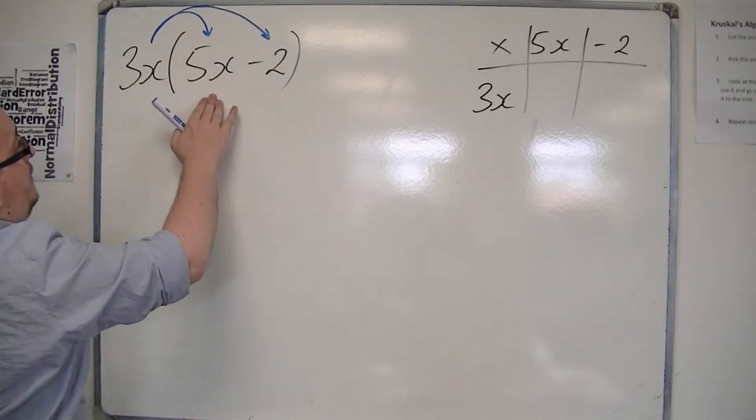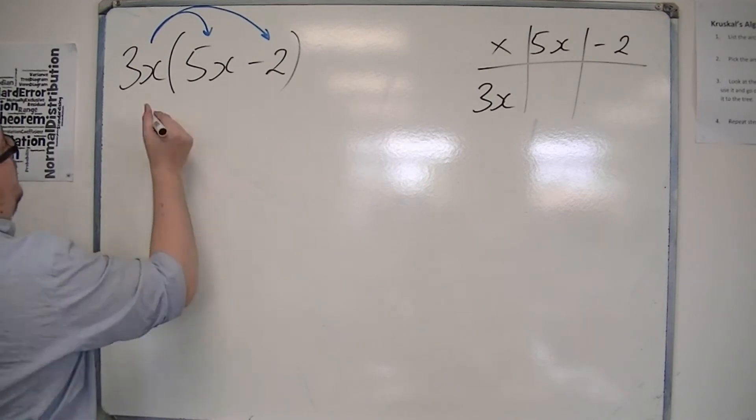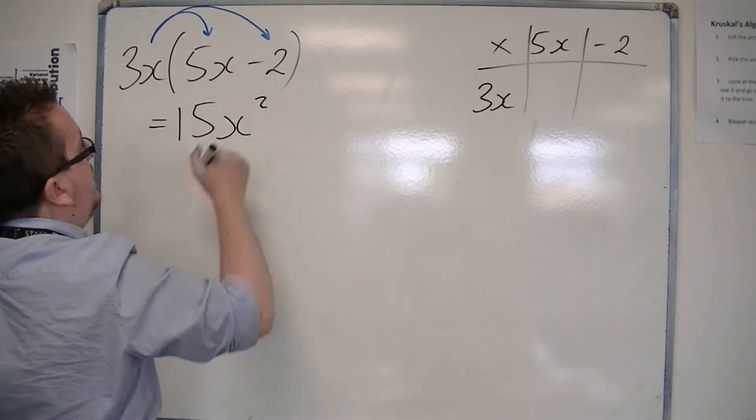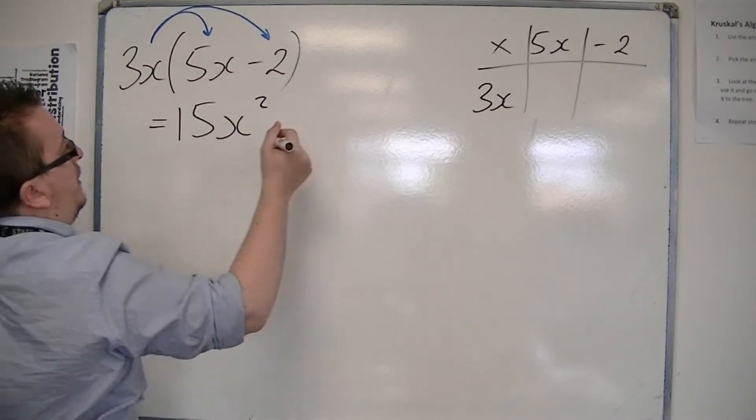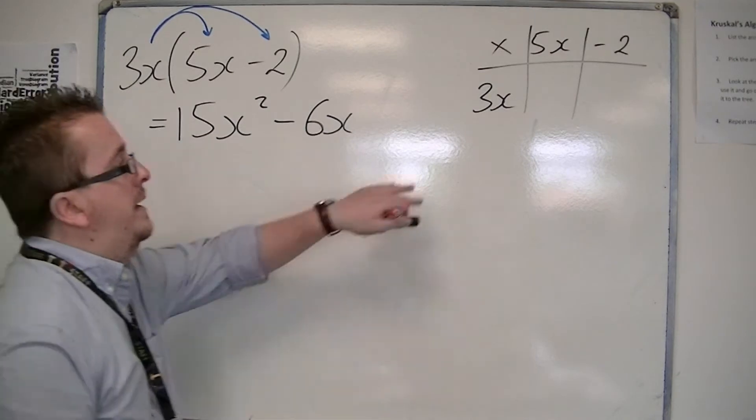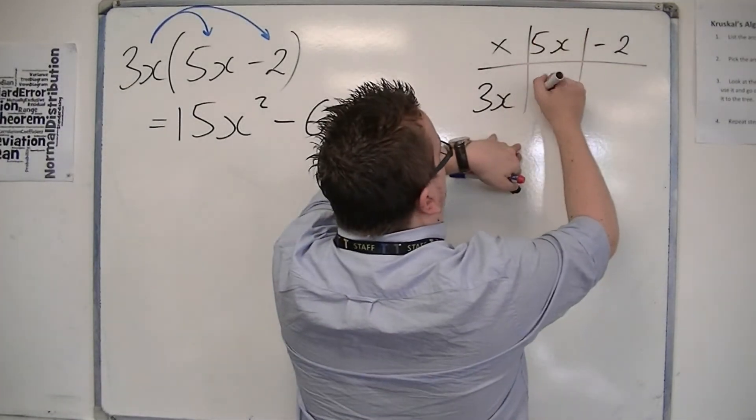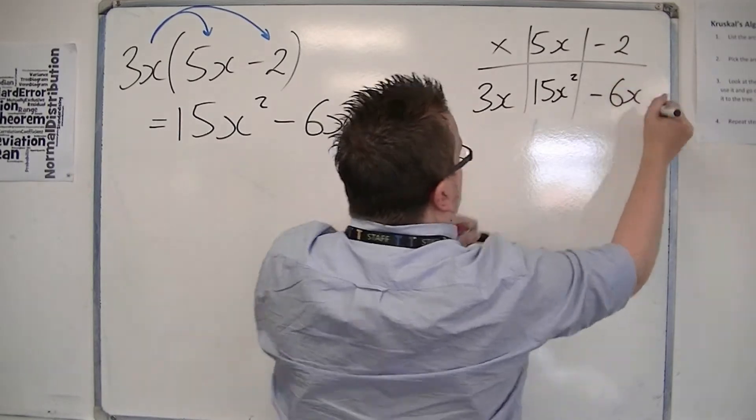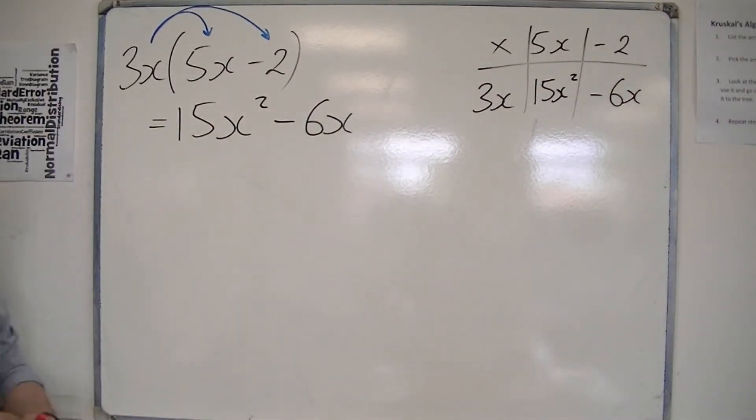So we have 3x times 5x—the 3 times the 5 makes 15, x times x makes x squared. And then we have 3x times minus 2 is minus 6x. It would be exactly the same in here: 3x times 5x is 15x squared, and 3x times minus 2 is minus 6x. Nothing really new there.